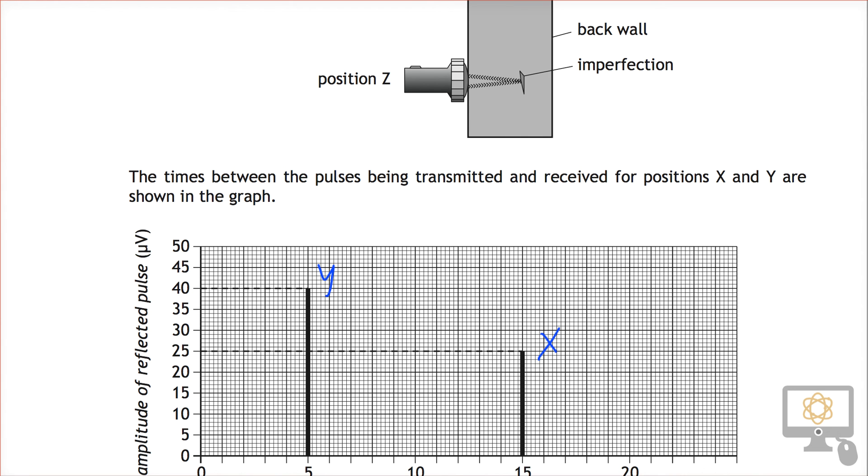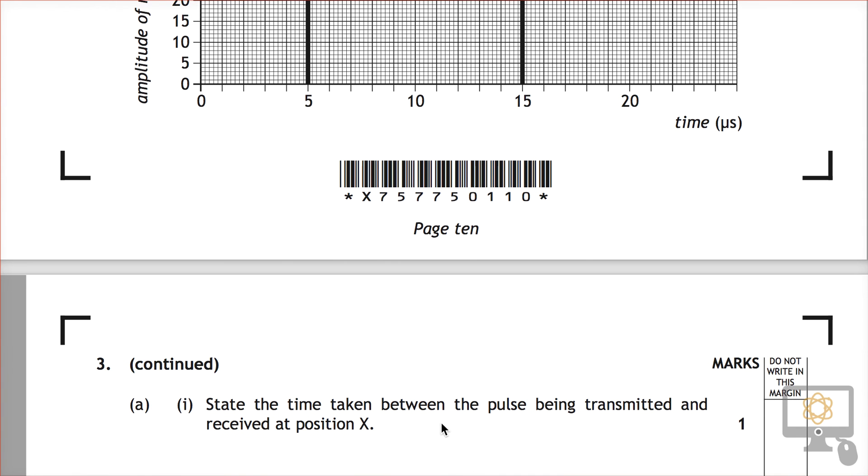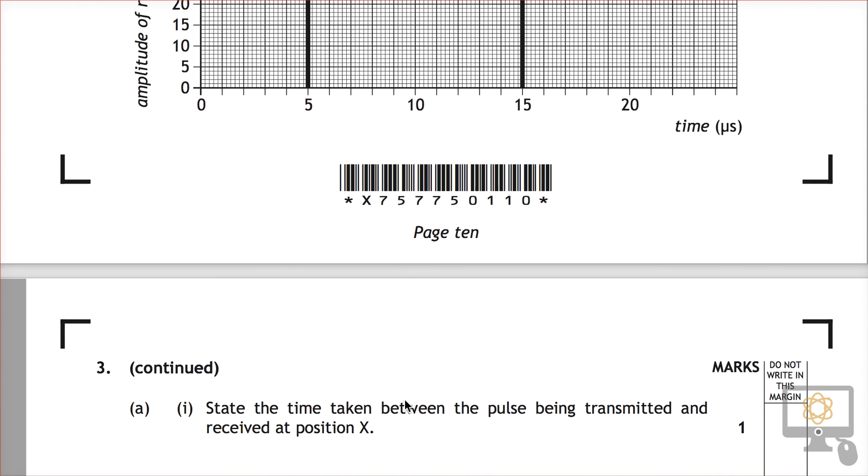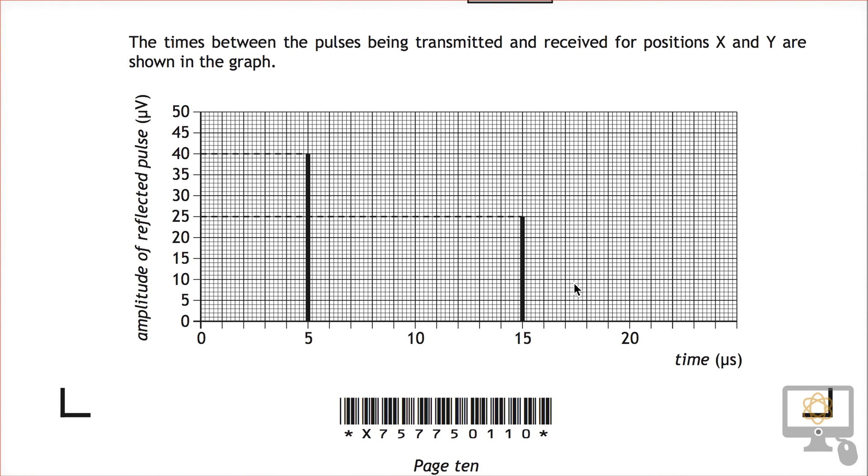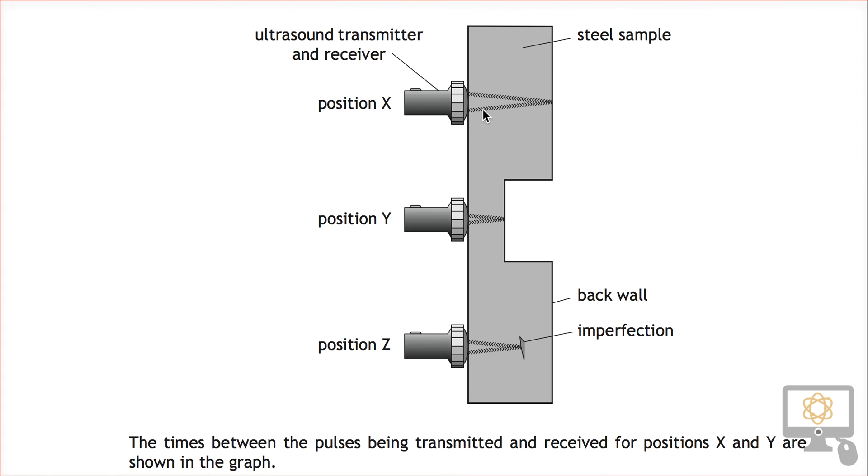On to the question which is: state the time taken for the pulse to be transmitted and received at position X. Well we've just discussed that. Position X is this one here, the 15 microsecond pulse, and that's because it takes longer and the amplitude of the reflection is less because it's traveling through more steel.